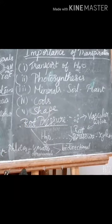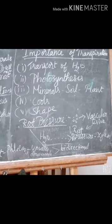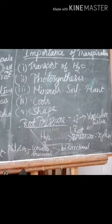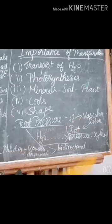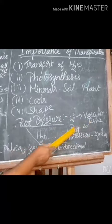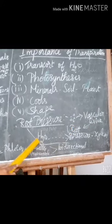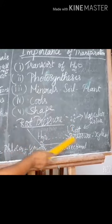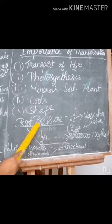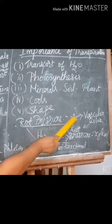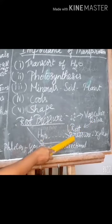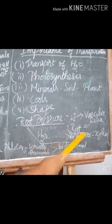Root pressure: ions transport through the vascular tissue — xylem and phloem. Ions transport to the vascular tissue of the root, then water increases the pressure in the xylem, and this is called root pressure.